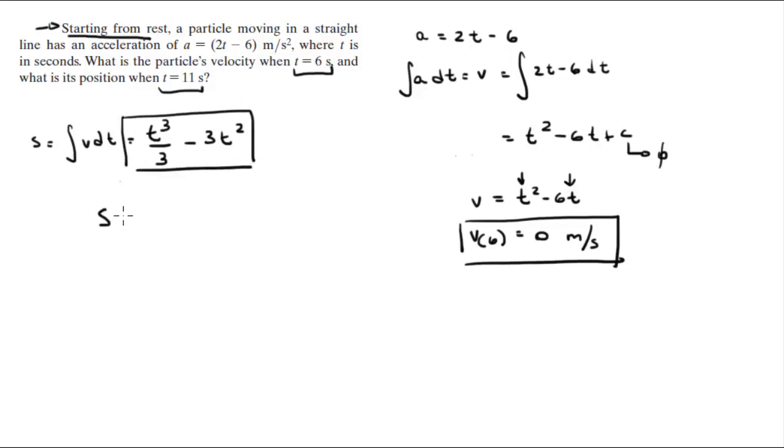They are asking you for the position when t is equal to 11. So all you have to do is plug in 11 and do 11 cubed divided by 3 minus 11 squared times 3. You are going to get that the position is equal to 80.7 meters. Final answer for the position at 11. Final answer for the velocity at 6.